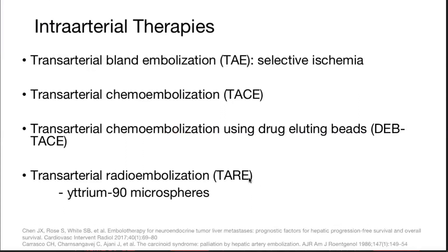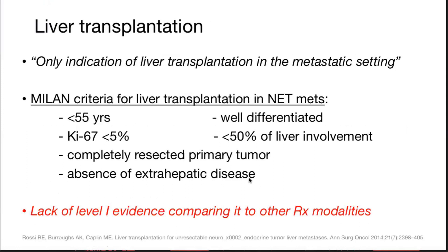Intra-arterial therapies — there are four types: trans-arterial bland embolization causing selective ischemia, chemoembolization, chemoembolization using drug-eluting stents, and radioembolization using Yttrium-90 microspheres. These are all therapies that can be used in cases of liver metastasis. The last option is liver transplantation, although not very promising, it is the only indication of liver transplantation in metastatic setting.